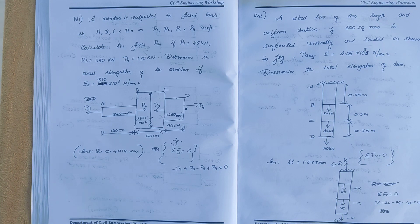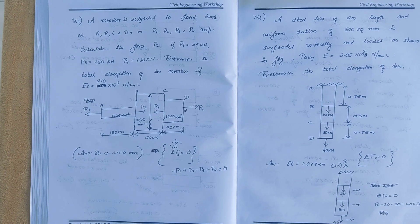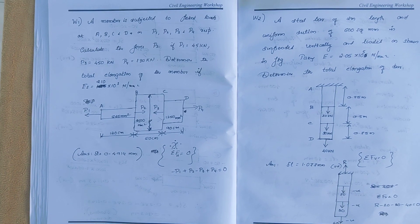A member is subjected to point loads at A, B, C and D as P1, P2, P3 and P4 respectively. Calculate the force P2 if P1 equals 45 kN, P3 equals 450 kN, P4 equals 130 kN. Determine the total elongation of the member if E is equal to 210 into 10 power 3 N/mm².